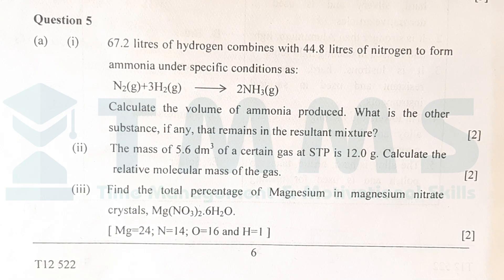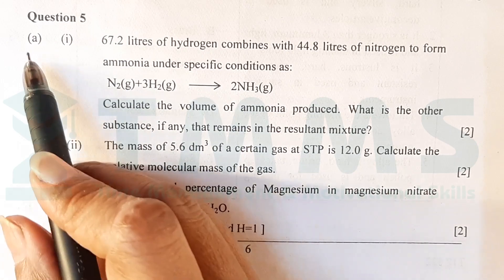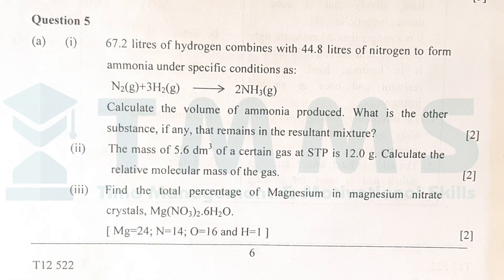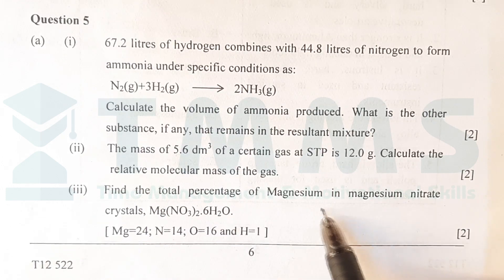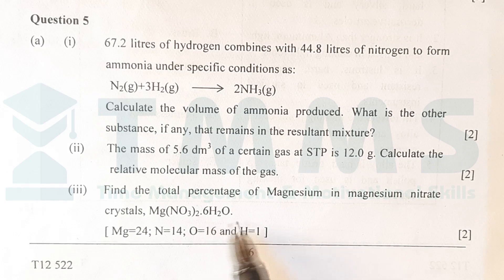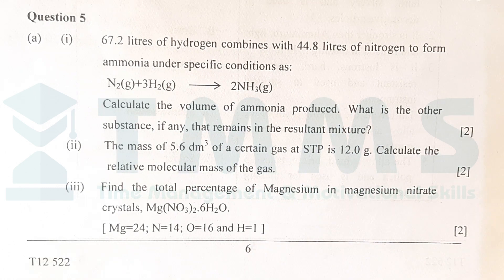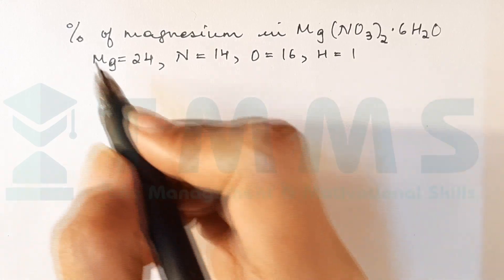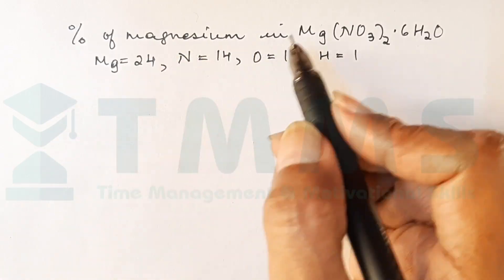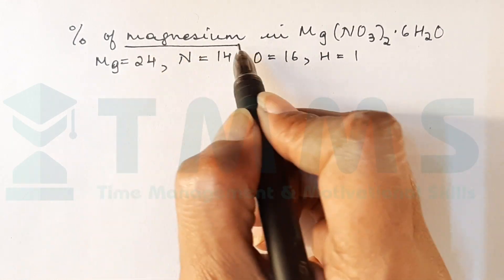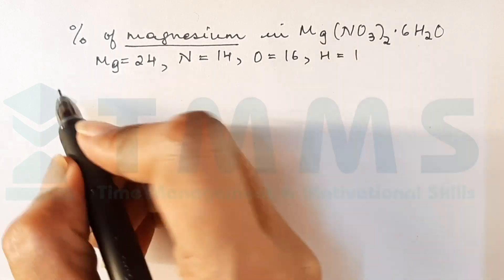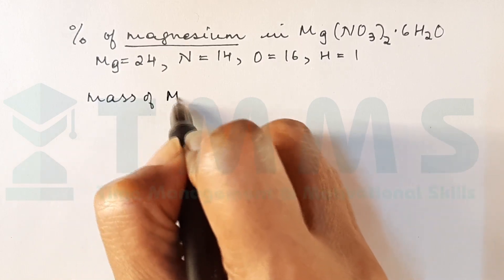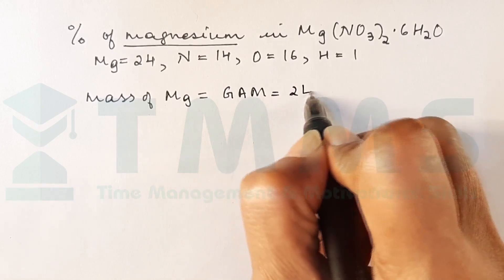Let us now do the 2012 question — question number 5, subpart 3A. Find the total percentage of magnesium in magnesium nitrate crystals: Mg(NO3)2·6H2O, with all RAMs provided. No need to look at the periodic table. Tip 2: find the mass of magnesium. There is only 1 magnesium atom, so mass of Mg = GAM = 24 g.